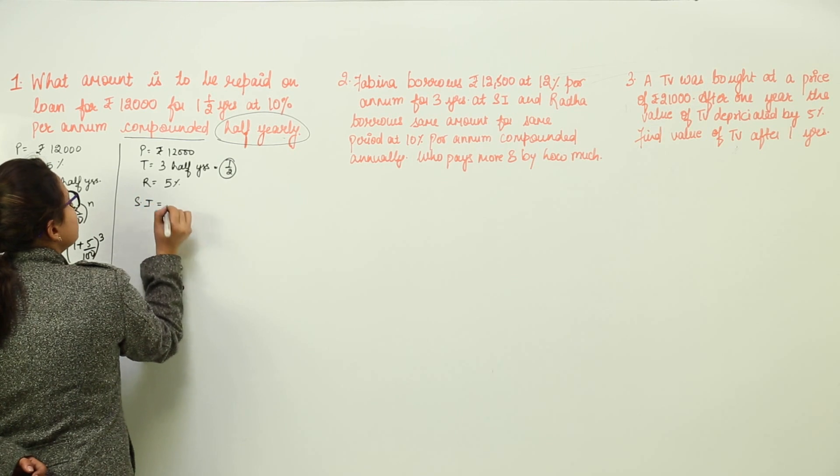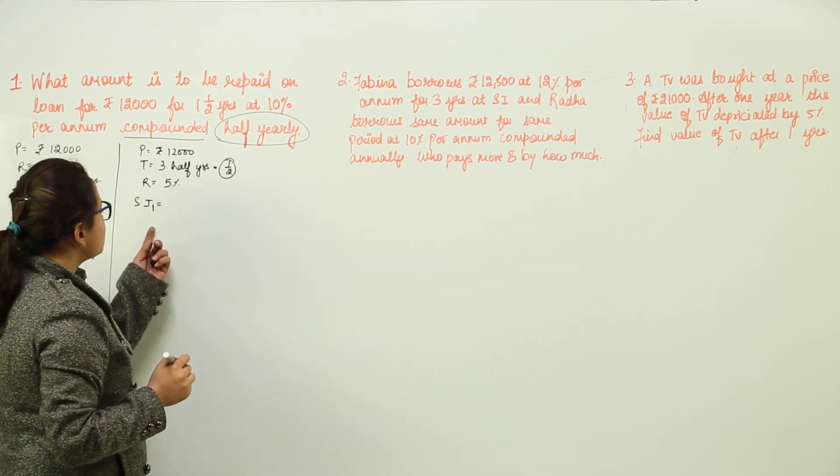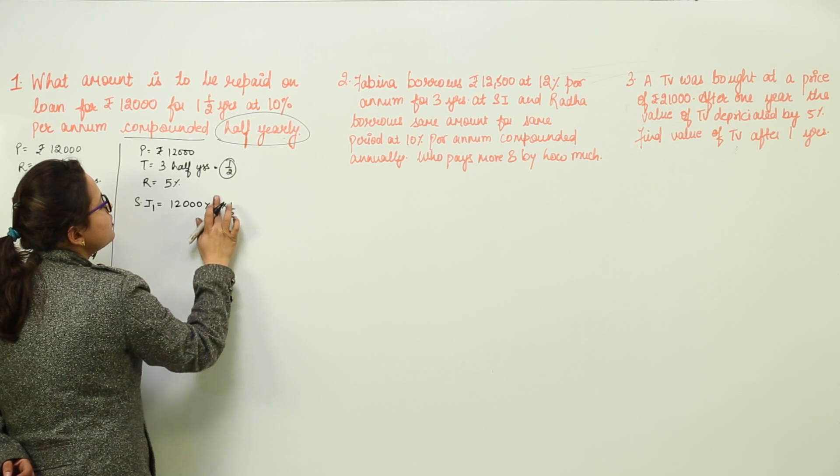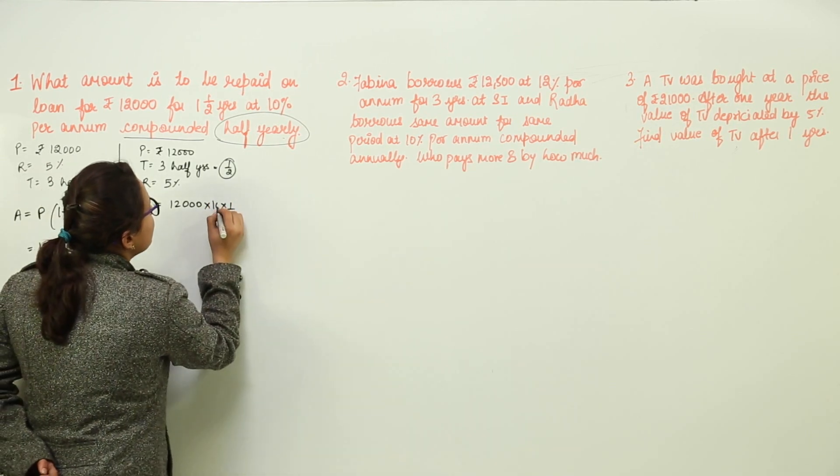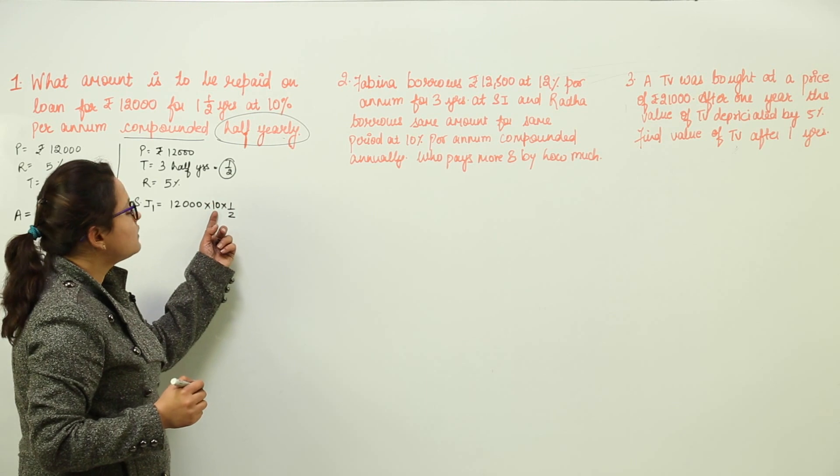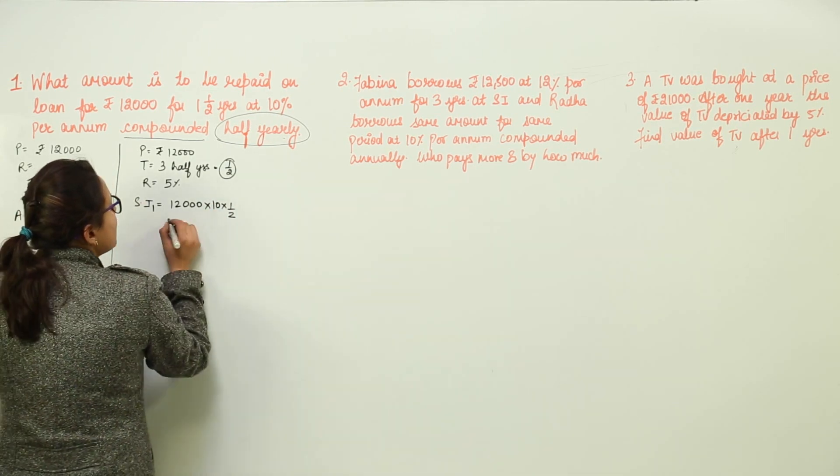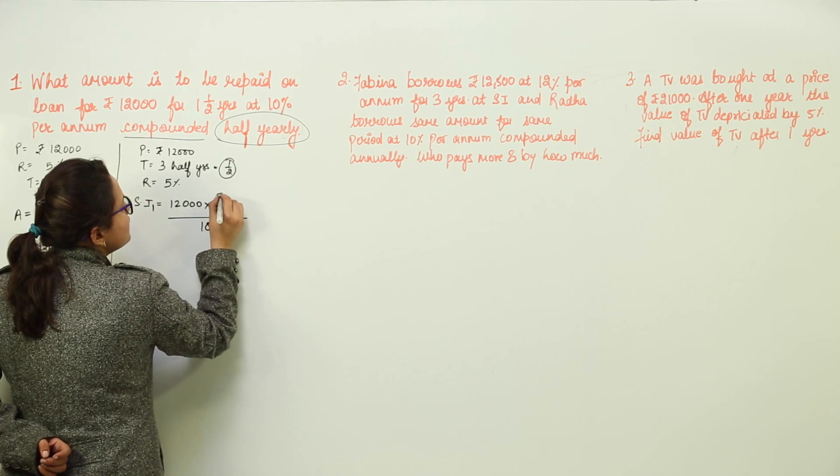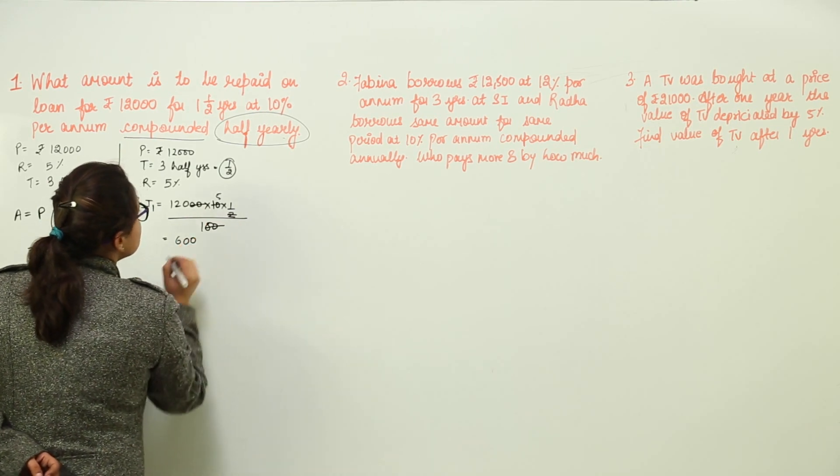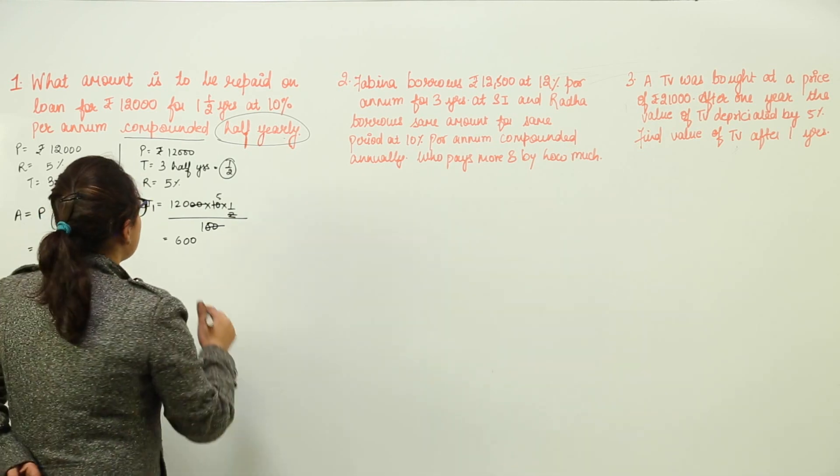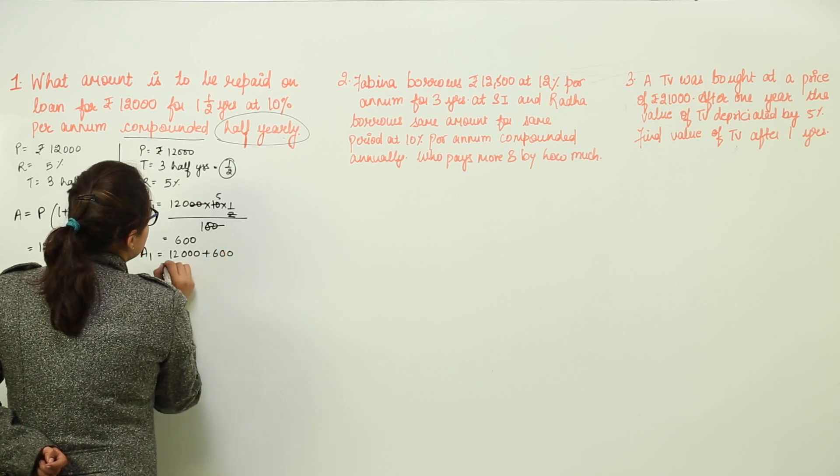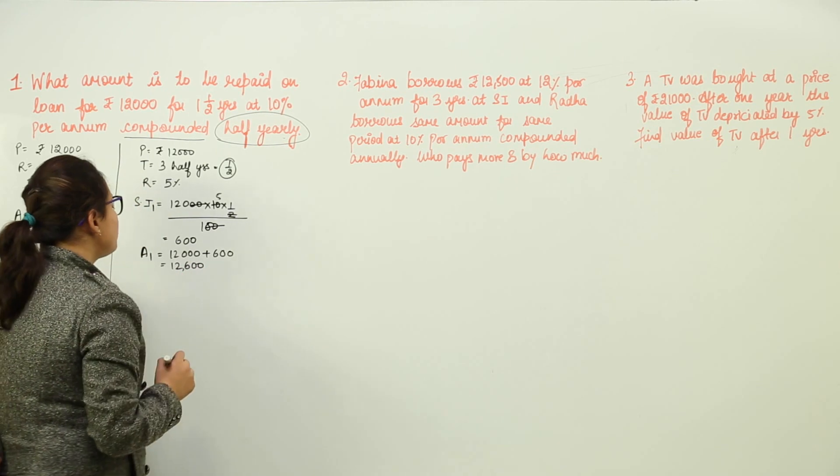Let us calculate the simple interest for 1 year. For first year, the simple interest would be 12,000 into 5 into 1 by 2. Over here, the rate has already reduced to 5. So, this solves to 600. We get 600 as the interest for first year. Now, the amount for the first year would be 12,000 plus 600. This solves to 12,600.